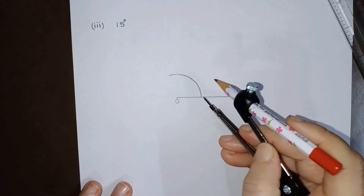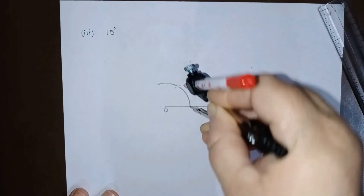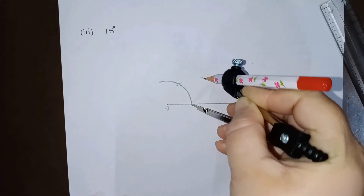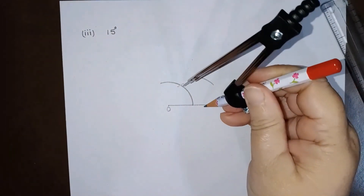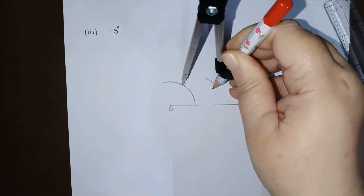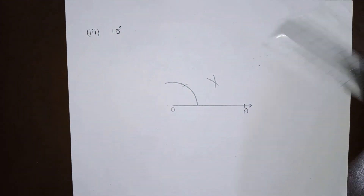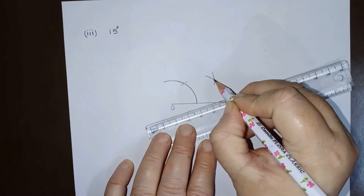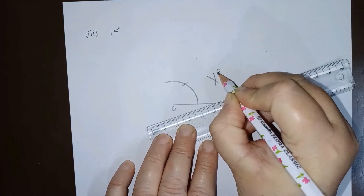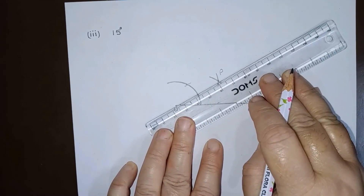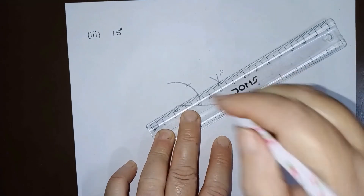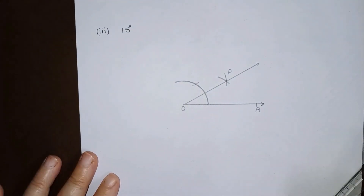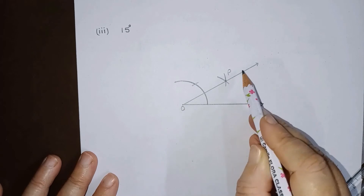Taking this point as center, this is an angle of 60 degrees. Now let us bisect 60 degrees to get an angle of 30 degrees. We can bisect the angle of 60 degrees like this. Let this point be P. When P and O are joined we get an angle of 30 degrees. Now to get an angle of 15 degrees we have to bisect angle AOP.